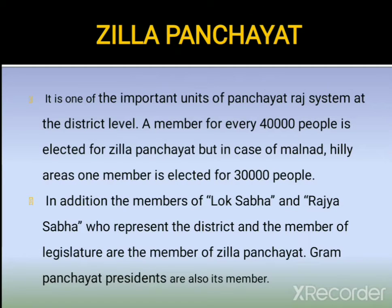Now the third tier, Jilla Panchayat. It is one of the important units of Panchayat Raj system at the district level. One member is elected for every 40,000 people. But in case of Malanad and hilly areas, one member is elected for every 30,000 people. In addition, members of Lok Sabha and Rajya Sabha representing the district, members of the legislature, and Gram Panchayat presidents are also its members.